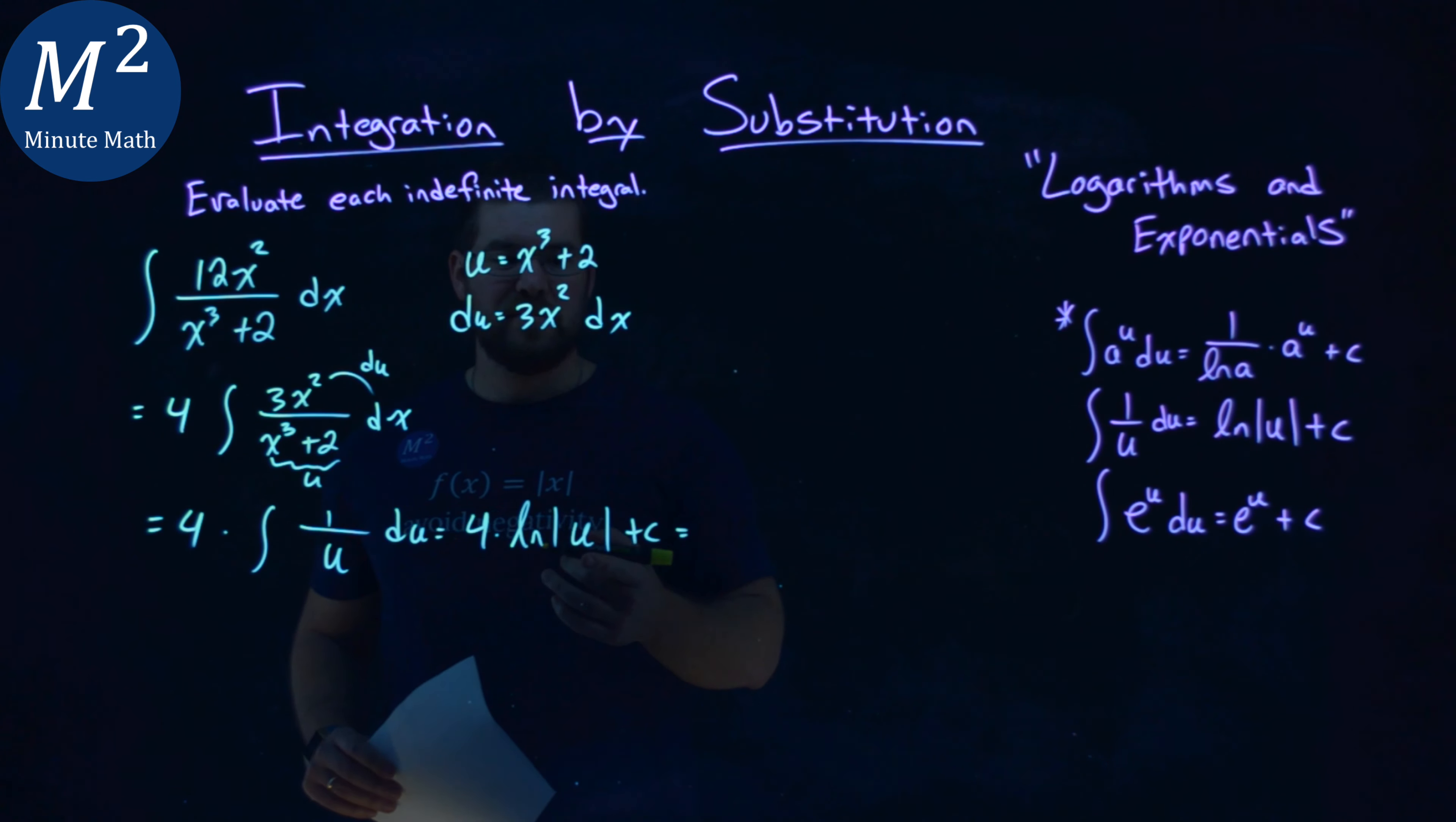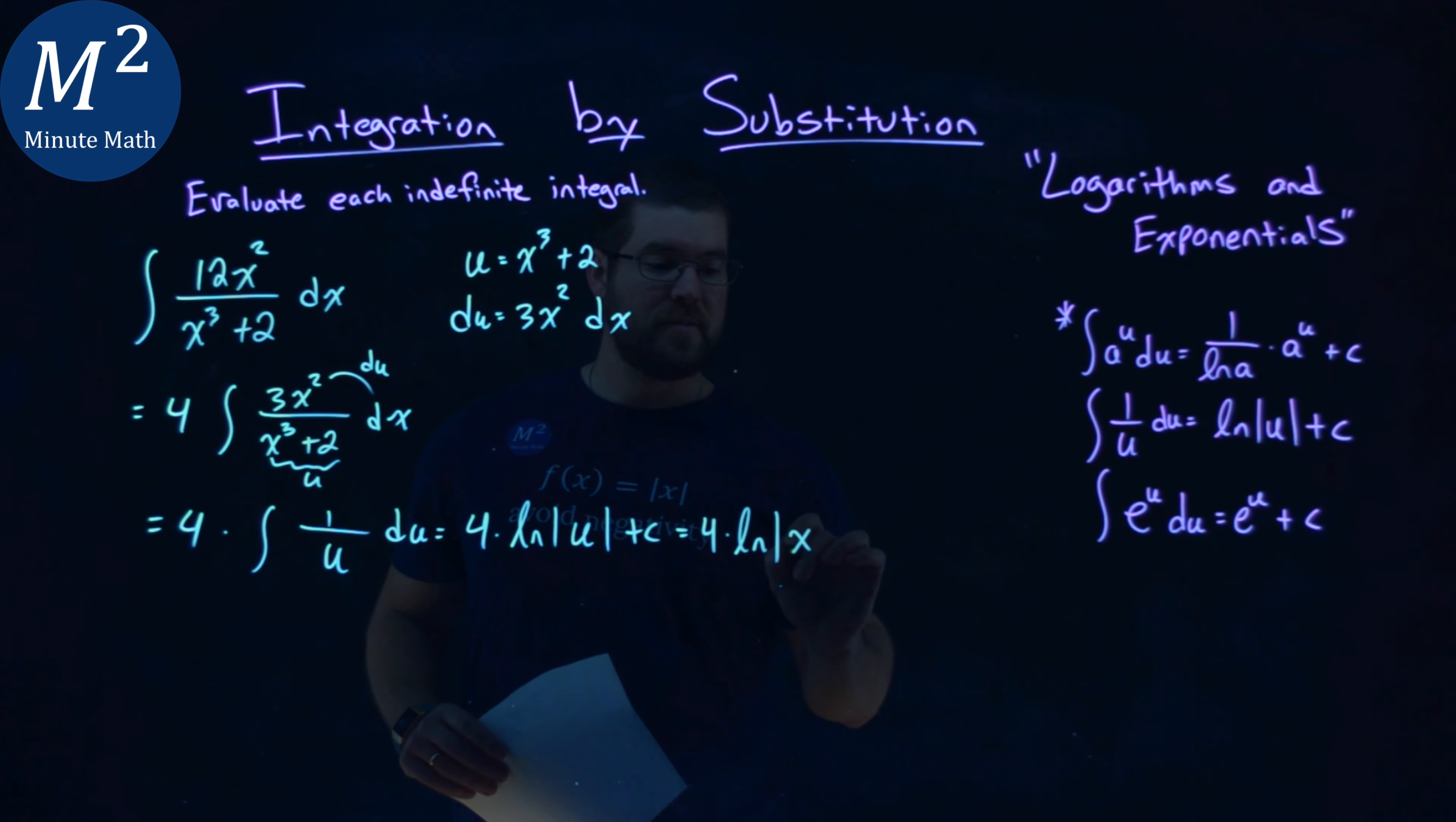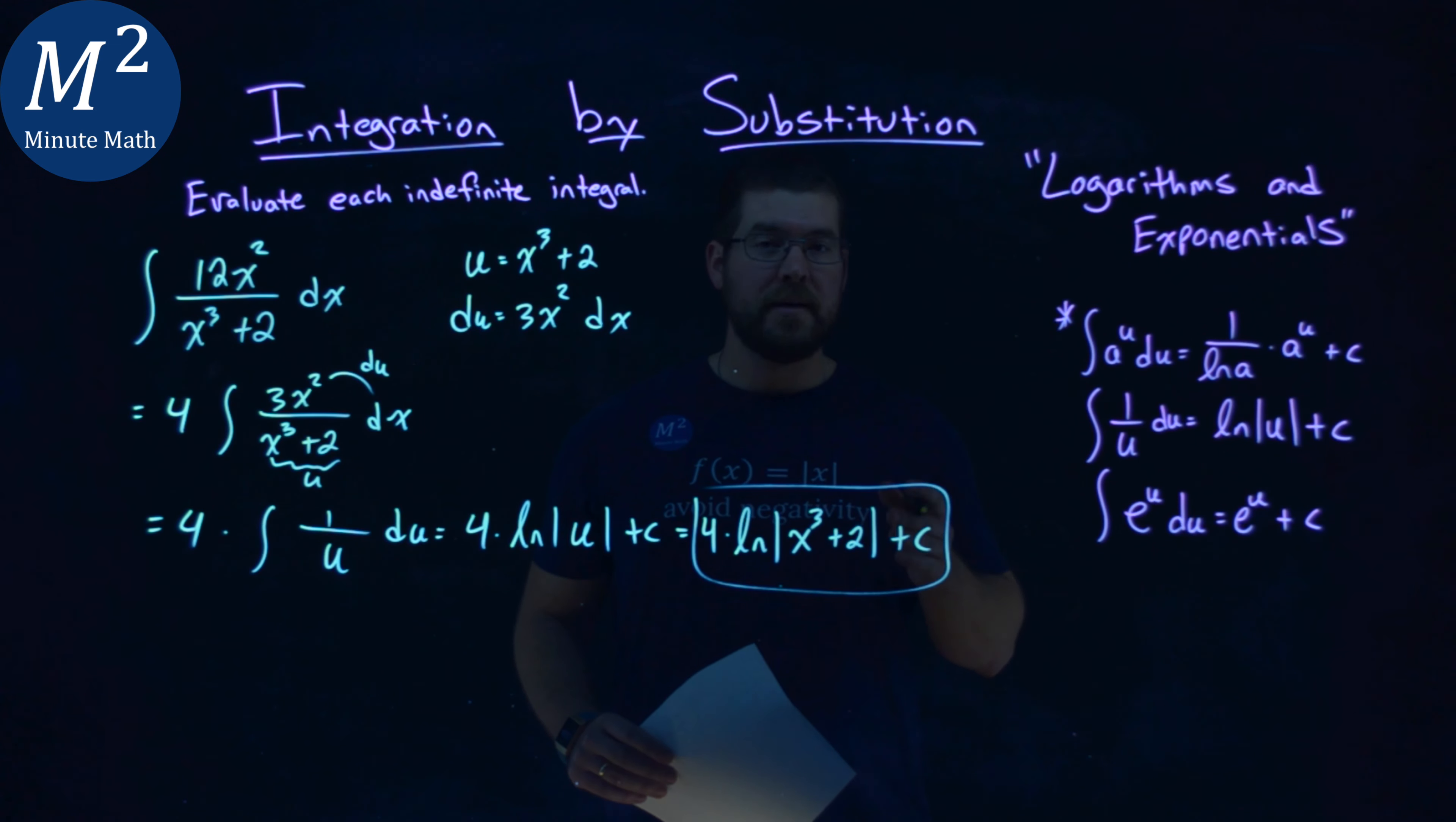Well then from there, we can plug x cubed plus 2 back in for u. So we have 4 times the natural log absolute value of x cubed plus 2, then plus c right there. And that's it. So my final answer here is 4 times the natural log of the absolute value of x cubed plus 2, plus c.